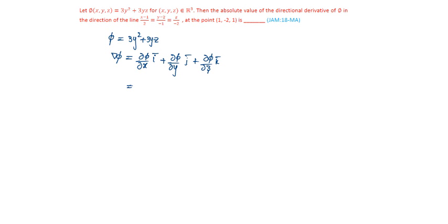That equals: x terms are not present, so 0; y terms are present, so differentiation will be 6y plus 3z times j bar, plus 3y times k bar.